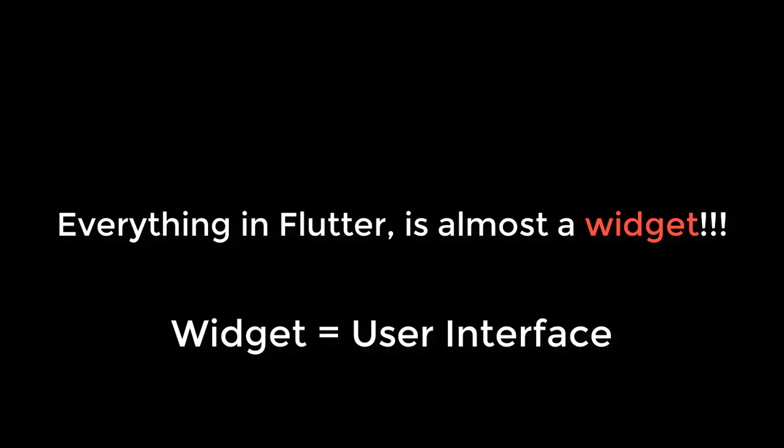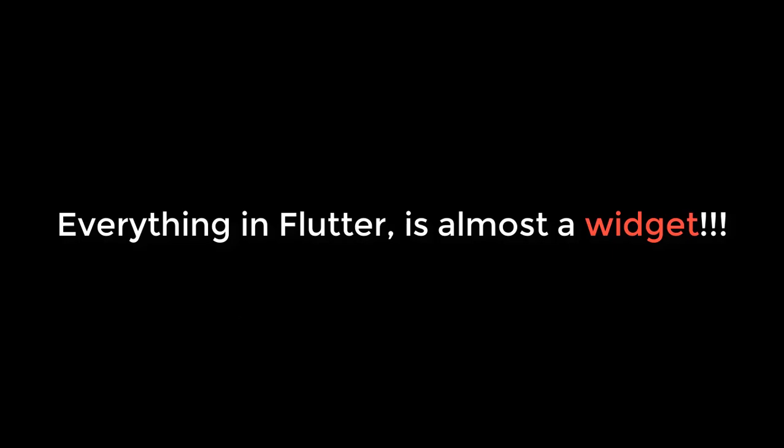Starting from material app, app bar, text, center, row, column, table, navigation drawer, bottom drawer — things like that are the widgets in Flutter. So when we as a whole see our application, that application is a combination of widgets. From top to bottom, from left to right, we have widgets. That's why I keep on saying that in Flutter almost everything is a widget.